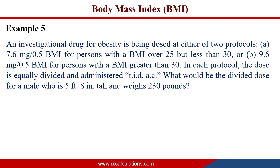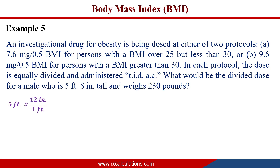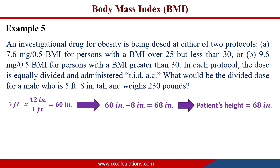The patient's weight is in pounds and height is in feet and inches, so we use the imperial BMI equation. First, convert the height: 5 ft × 12 in/ft = 60 inches, plus 8 inches = 68 inches. The patient's height is 68 inches.